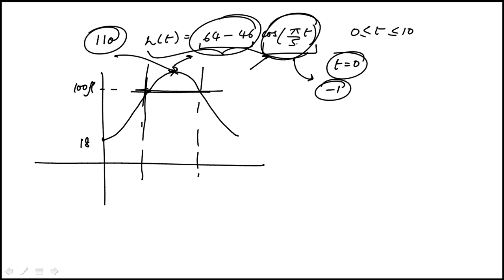That's going to happen at the time when the cosine, this angle, is going to be equal to pi. So that would happen at t equal to 5, right here in the middle. It's a symmetric function. Now we need to find this point here.